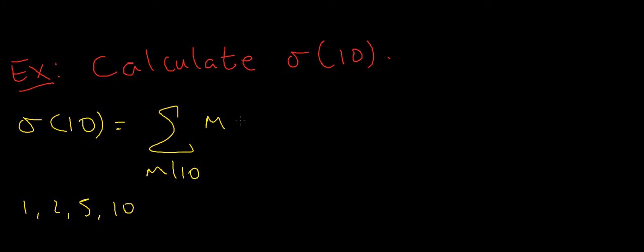What does this mean for sigma of 10? Our sum is: when m equals 1, the first term is 1; when m equals 2, the second term is 2; when m equals 5, the third term is 5; and when m equals 10, the fourth term is 10. So 1 plus 2 plus 5 plus 10 equals 18, meaning sigma of 10 equals 18.